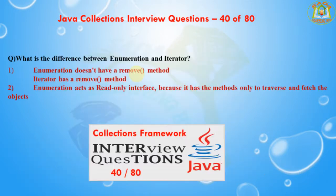The next question is: what is the difference between enumeration and iterator? Enumerator doesn't have a remove method, while iterator has a remove method. Enumeration acts as a read-only interface because it has methods only to traverse and fetch the objects.